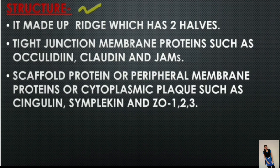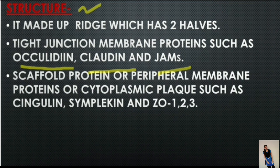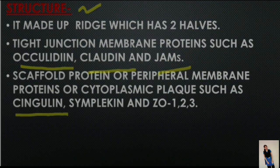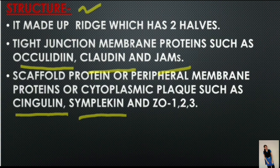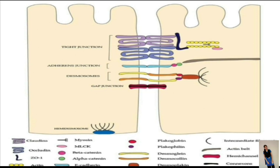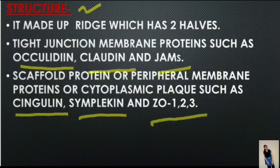Tight junction membrane proteins include occludin, claudin, and JAMs — junctional adhesion molecules. Scaffold proteins or peripheral membrane proteins or cytoplasmic plaque proteins include ZO-1, ZO-2, and ZO-3. Here in the picture you can see the tight junction.